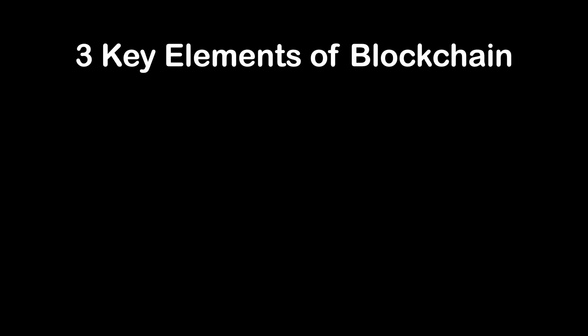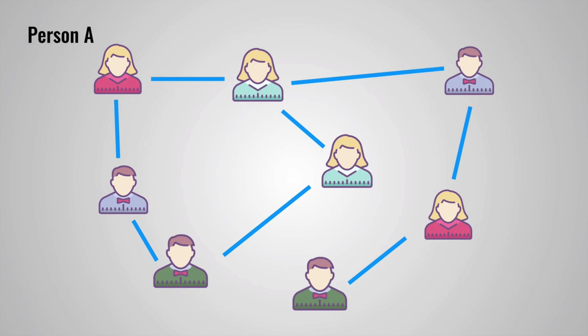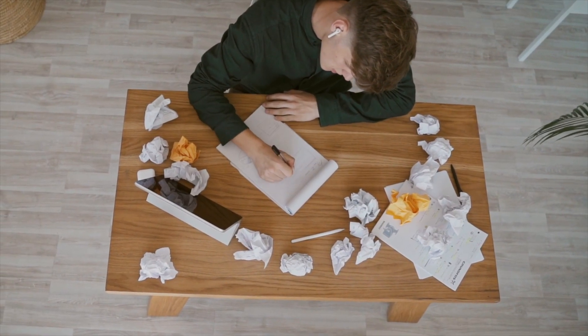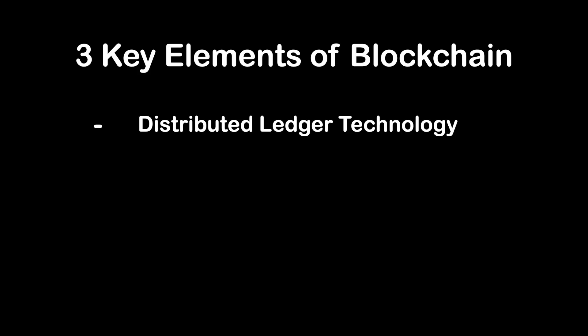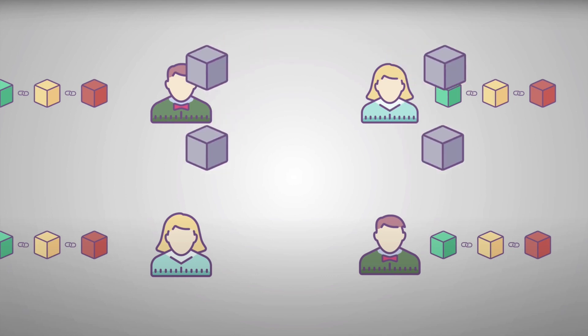There are three key elements of a blockchain. Firstly, distributed ledger technology — all network participants have access to the distributed ledger and its immutable records of transactions. With this shared ledger, transactions are recorded only once, eliminating the duplication of effort that's typical of traditional business networks.